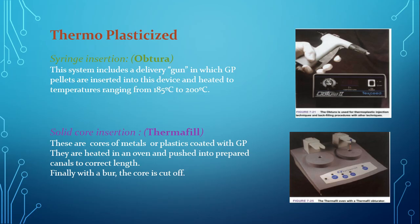Next is the thermoplasticized technique. In this technique we can use syringe insertion or solid core insertion (Thermafil). In syringe insertion, a delivery gun is loaded with gutta-percha pellets and heated to temperatures ranging from 185 to 200 degrees centigrade. In solid core insertion (Thermafil), these are cores of metals or plastics coated with gutta-percha, heated in an oven and pushed into prepared canals to the correct length, and finally the core is cut off with a bur.